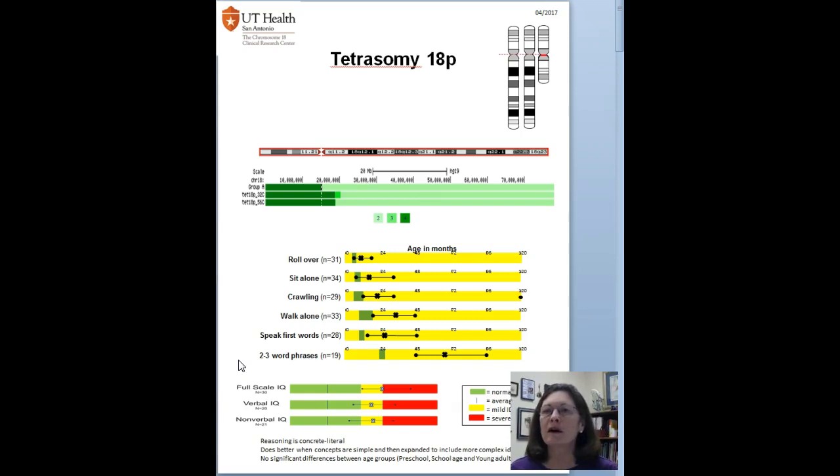Below that are the IQ scores. In this diagram, the average range in the population is shown in green, and the average score for the population is this line that goes right here at an IQ of 100. The yellow is borderline or mild intellectual disability, and the red is severe to profound. And again, the X marks the average for the group, and the line shows the entire range within the group.